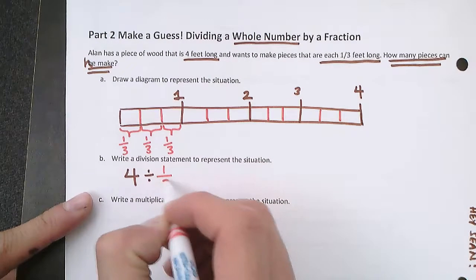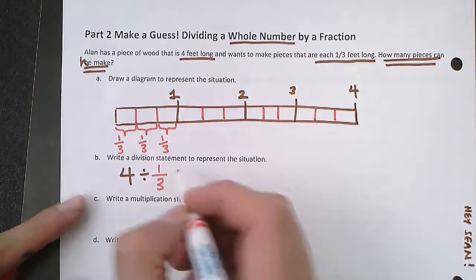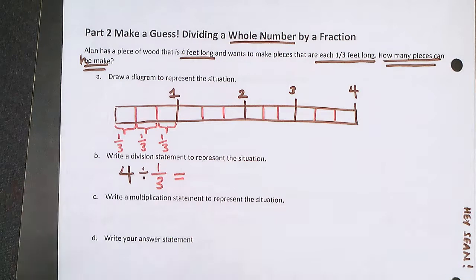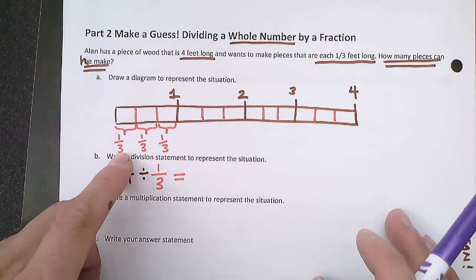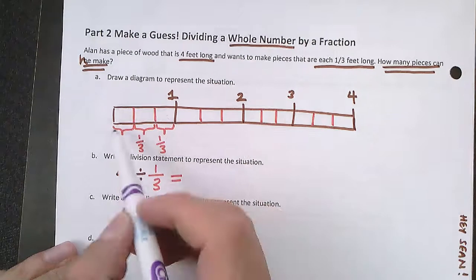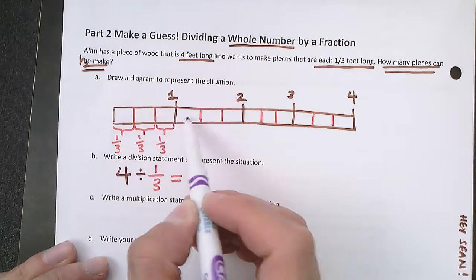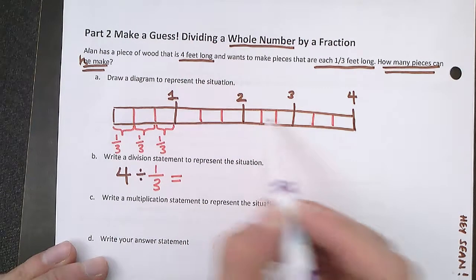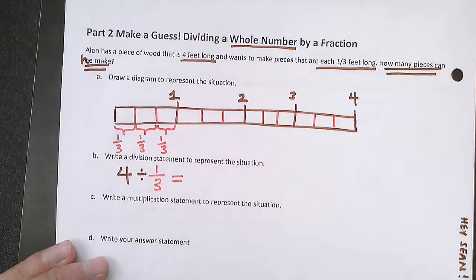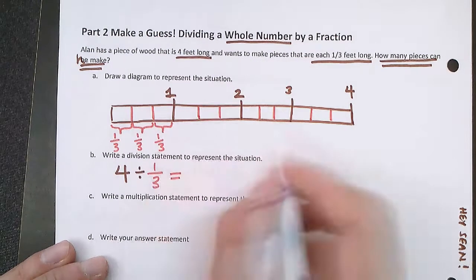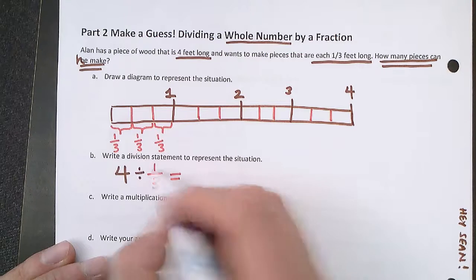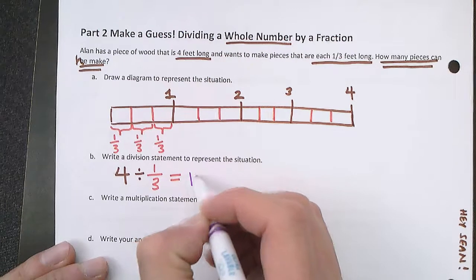So I divided it into sections that were one-third. And I count how many sections of one-third are there in the full 4 feet: 1, 2, 3, 4, 5, 6, 7, 8, 9, 10, 11, 12. There are 12 sections. So 4 divided by one-third is equal to 12.